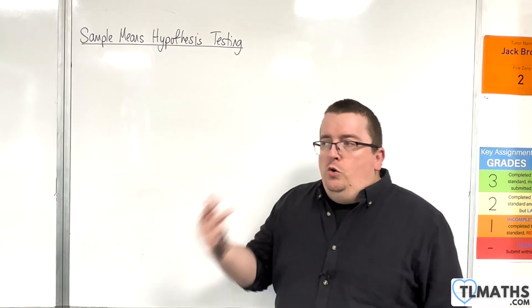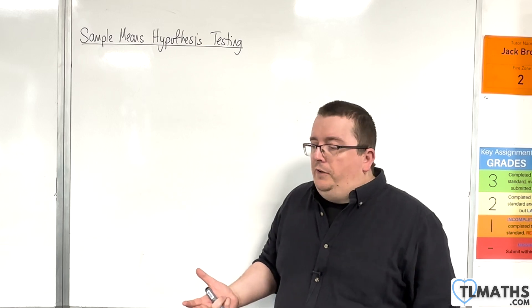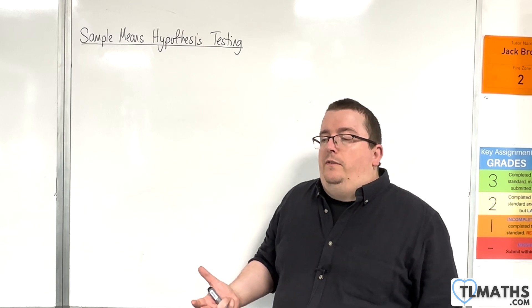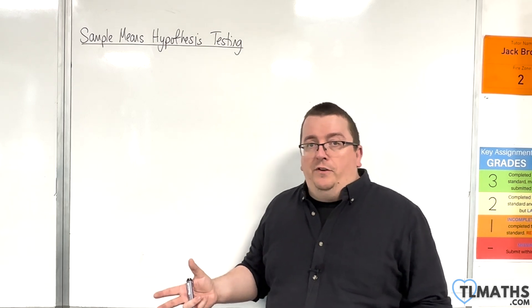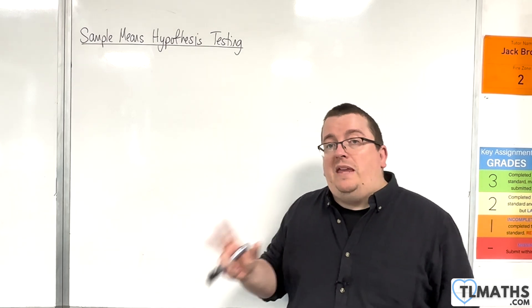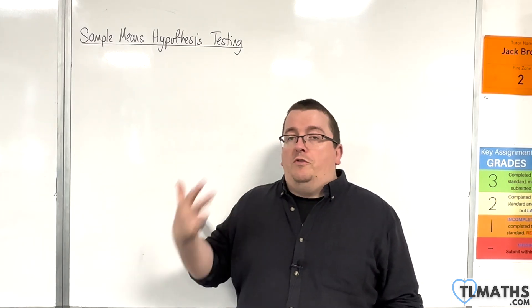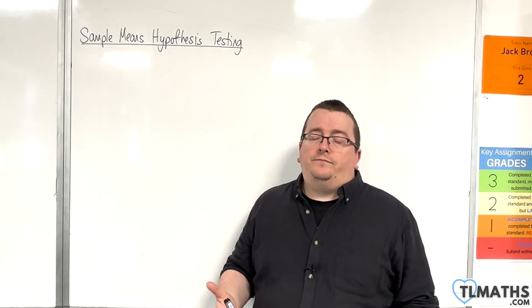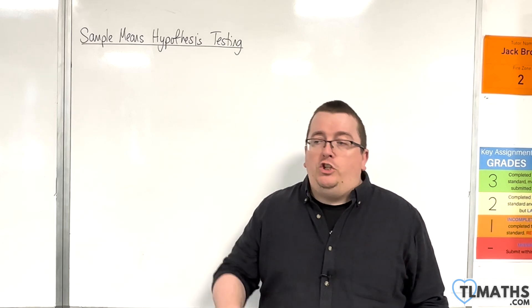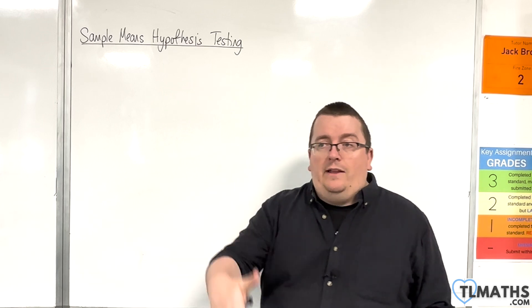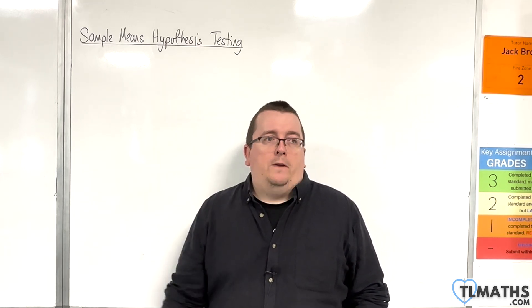So, you will have known from binomial hypothesis testing first, that there are two main ways of doing it. You either look at a p-value method, where you compare the p-value against the significance level, or you use a critical region method, where you have your value, you compare it with the critical region. Is it in the critical region? Yes, so we reject. And if it's not in the critical region, you fail to reject.